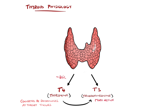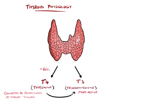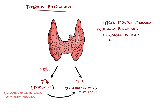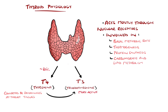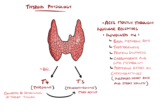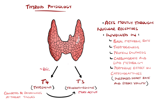This has many effects throughout the body, mostly acting via nuclear receptors in target tissues, and primarily affecting metabolic pathways such as basal metabolic rate, thermogenesis, protein synthesis, and lipid and carbohydrate metabolism, as well as a permissive effect on catecholamines, as it increases beta receptor expression, which can lead to increased heart rate and stroke volume.